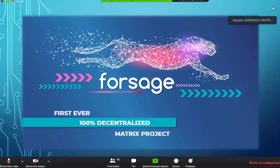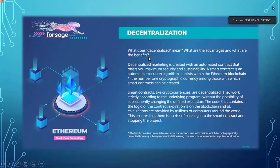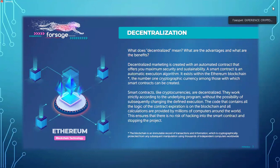Let's dive right in and talk about decentralization first. What does decentralized mean, and what are the advantages and benefits? Decentralized marketing is created with an automated contract that offers the maximum security and sustainability. A smart contract is an automatic execution algorithm.